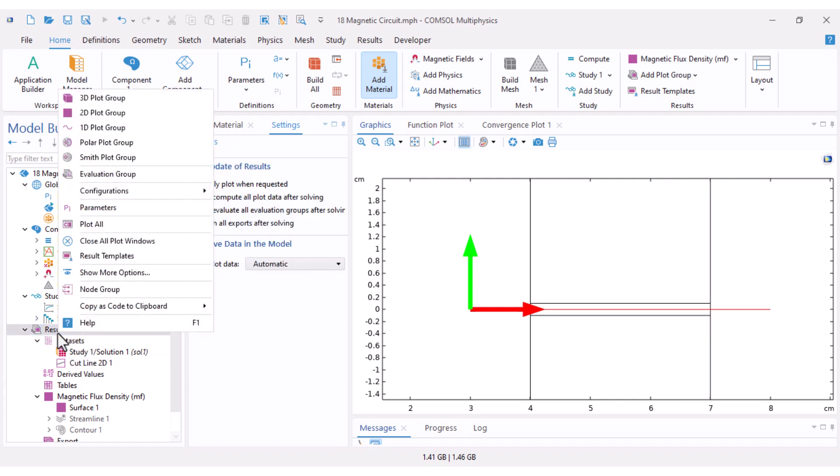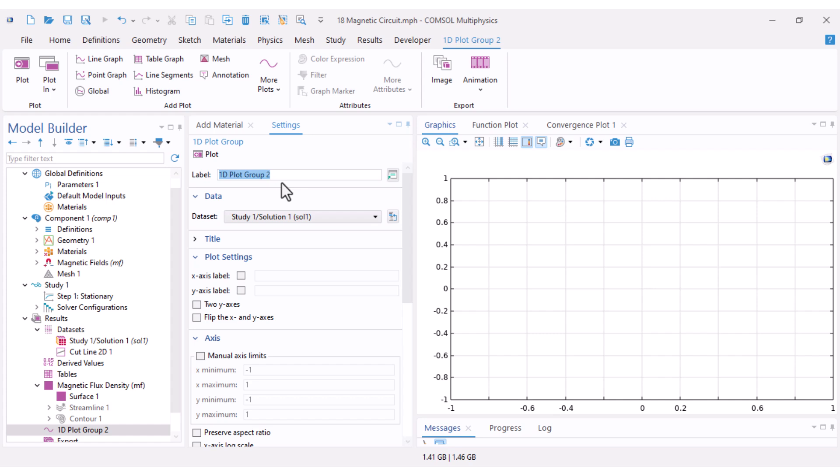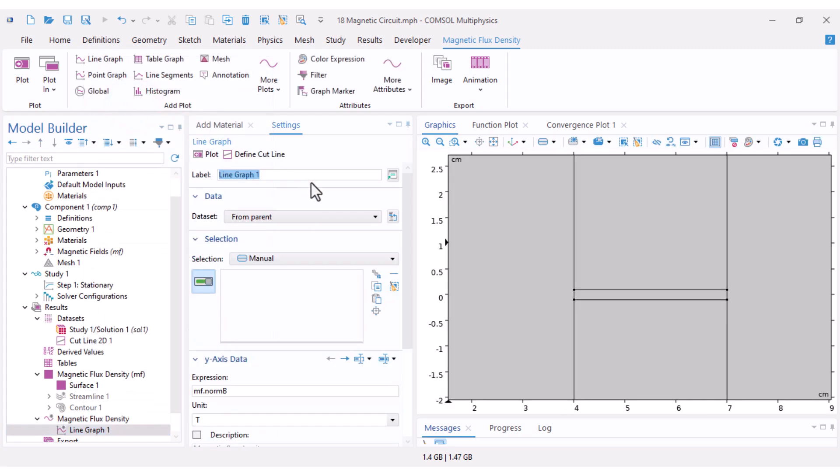I set x equal 3, y 0, and x equal 8, y 0. This is our cut line and it crosses the air gap. Now I right click and create a 1D plot group. I rename it as magnetic flux density. I add a line graph.